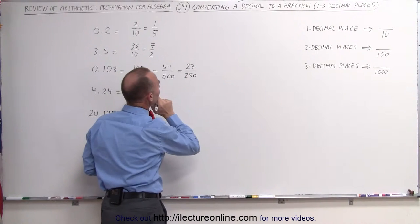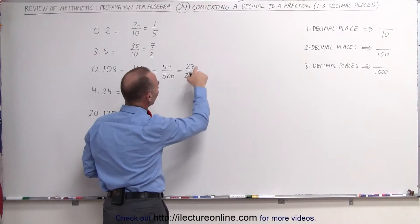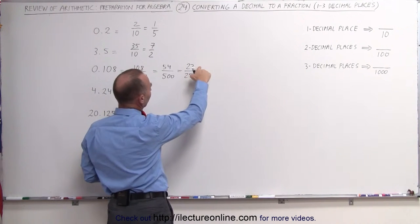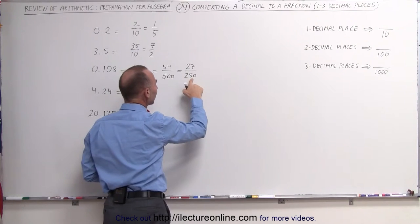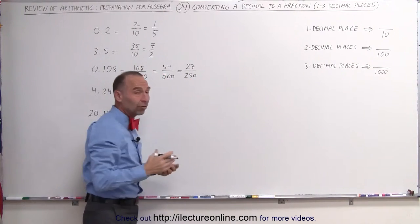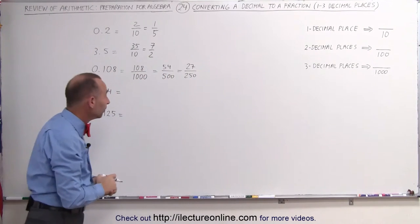Now they're no longer even. 27 is divisible by 3, but 250 is not. So therefore, that's as low as we can go — the simplified fraction is 27 over 250.